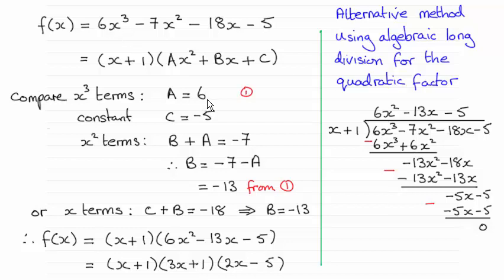The next term which is best to turn to is the constant term, because the only way you get the constant term is when you take the constant here, 1, and multiply it with the c. So 1 times c must give you the -5, so clearly c is -5.